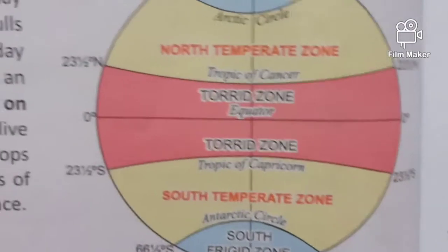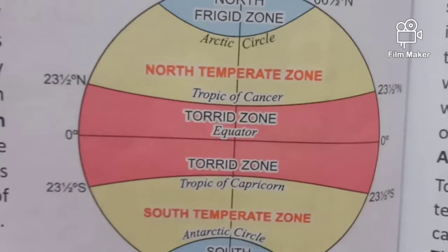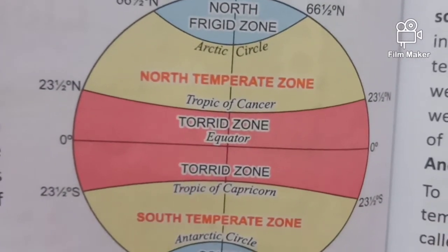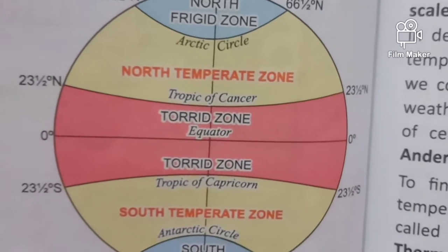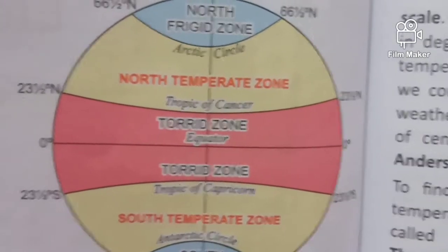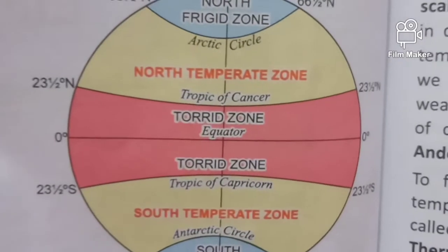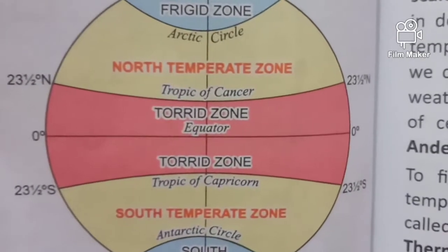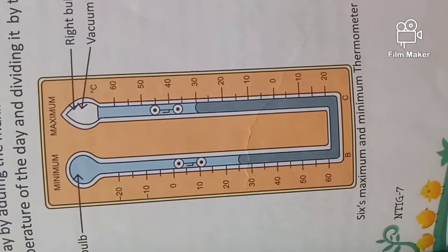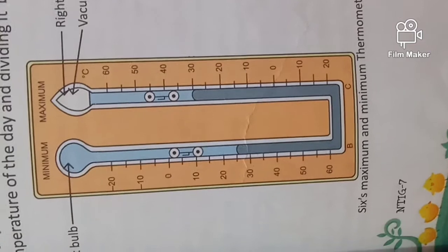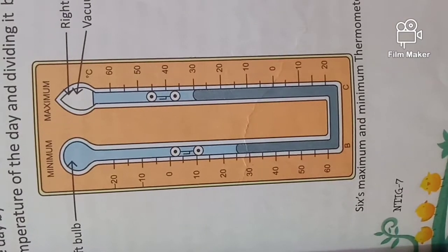The earth's temperature does not get heated directly by the sun. Since the earth is solid, it gets heated first, and then when the air comes in contact with the heated surface of the earth, it gets heated too. Temperature is measured by an instrument called a thermometer. The unit commonly used to measure temperature is degree Celsius, which was invented by Anders Celsius.